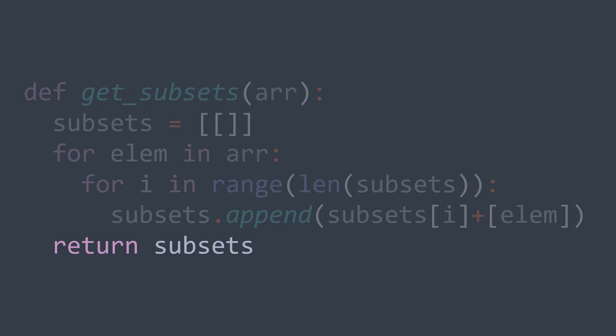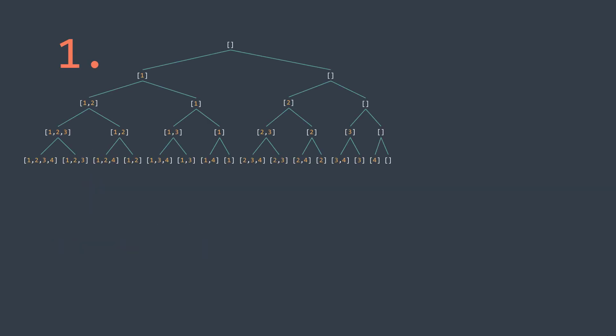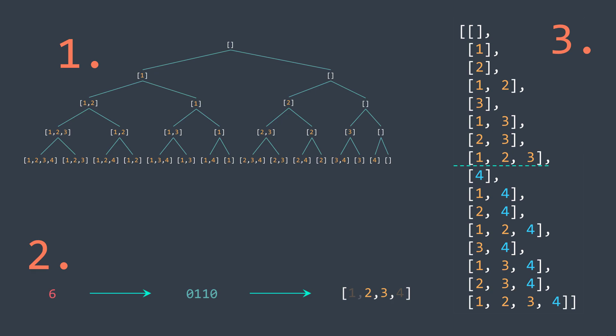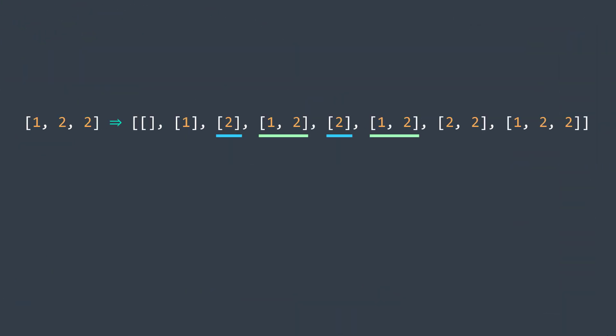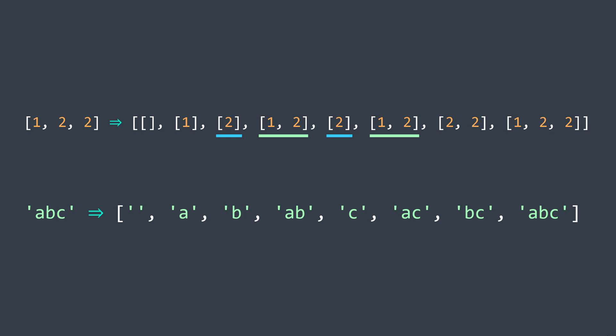A recap of the three solutions: the first is a recursive solution that calls itself twice at each element — once by taking it and once by leaving it. The second solution works with binary numbers: it generates binary numbers and each one represents one subset, generated by taking elements where the bit is one. The third solution is based on the fact that the subsets of n elements are the subsets of n−1 elements plus those same subsets with the nth element appended. Note that these algorithms allow duplicate subsets and can also be used to generate subsequences of a string.